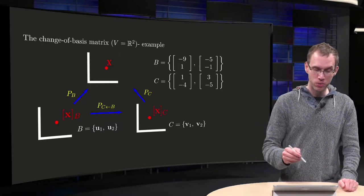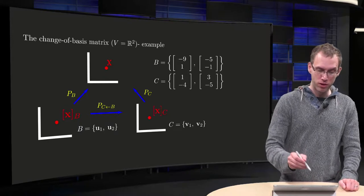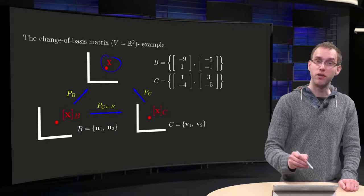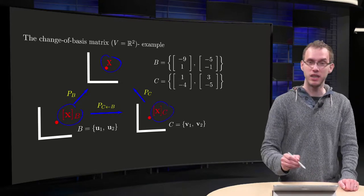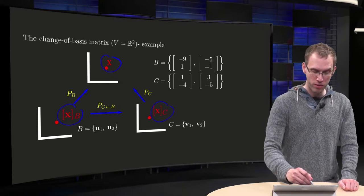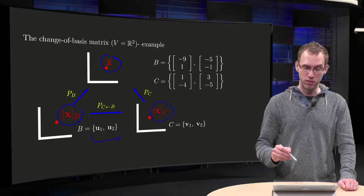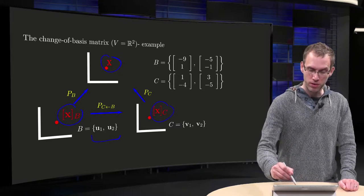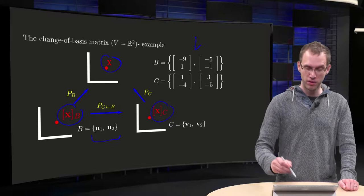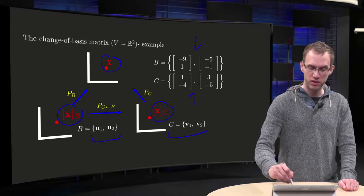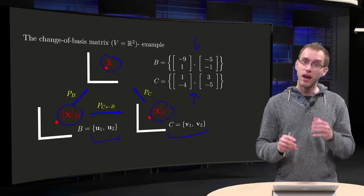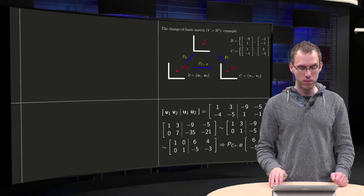So there we go again in R2, we have three copies of R2. Rx over here is coordinate vector xB in the basis B and coordinate vector xC in the basis C, where B is the basis consisting of V1 and U2 with the explicit numbers given over here and C consisting of V1 and V2 with the explicit factors given over there.